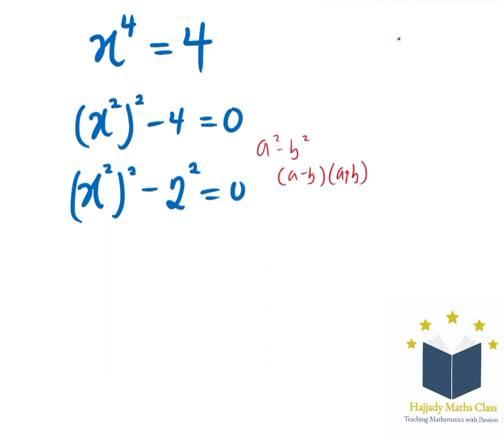So using the same approach here, I'm going to have x squared minus 2, x squared plus 2 equals 0.